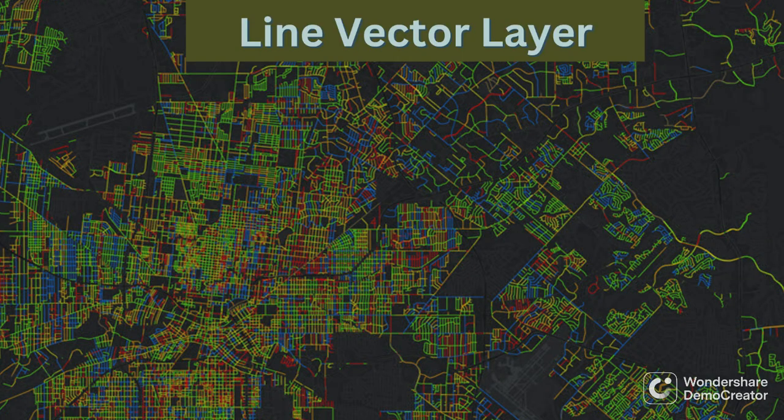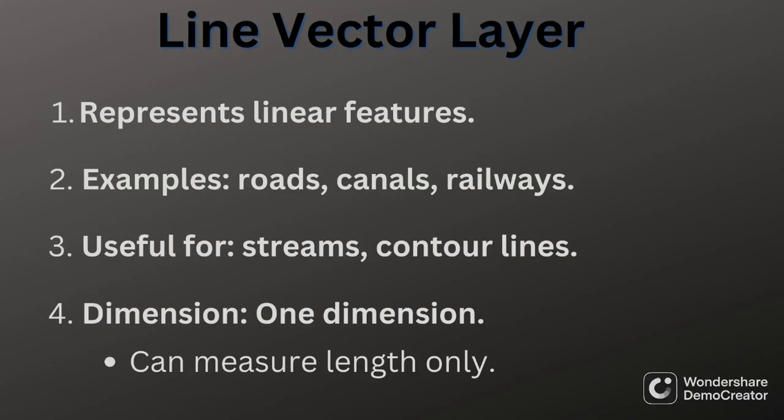Lines are used to represent features such as roads, canals, railways, streams, contour lines and so on. Line vectors have one dimension and therefore can only be used to measure length.